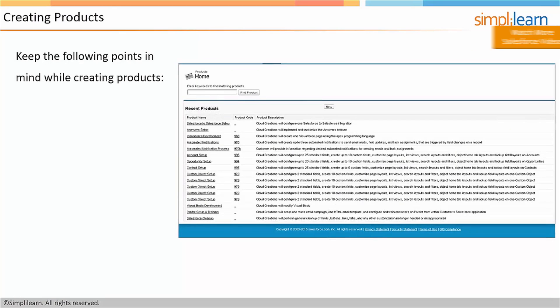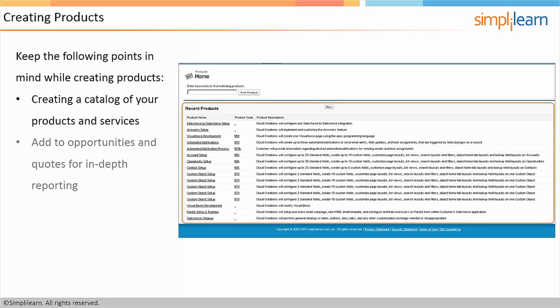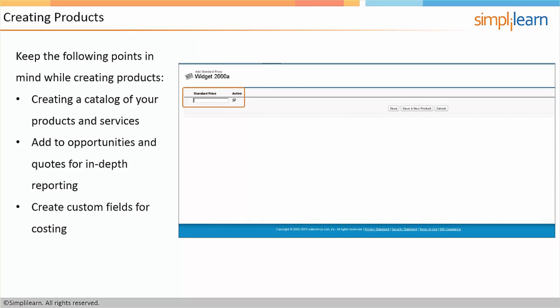The next thing we're going to talk about is creating products. Products in Salesforce are really records for you to track the products or services that you're selling. It's meant for you to create a catalog of all your products and services. You add them to opportunities and quotes for in-depth reporting. What that means is when you view a report, rather than just seeing a customer name, a date, and a dollar amount, you can actually see what products or services were quoted along with that opportunity. You can also create custom fields — for example, for cost reporting. You can have a field on products for your cost, so you can run reports later and say: my cost for a product was $40, we sold it for $100, and there's a $60 spread or margin on that specific product.